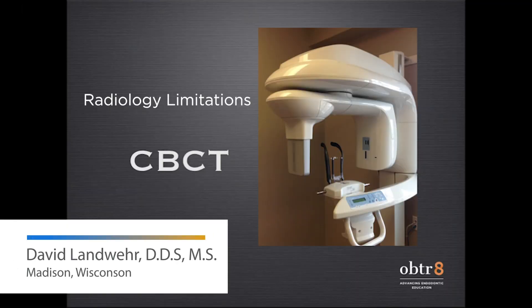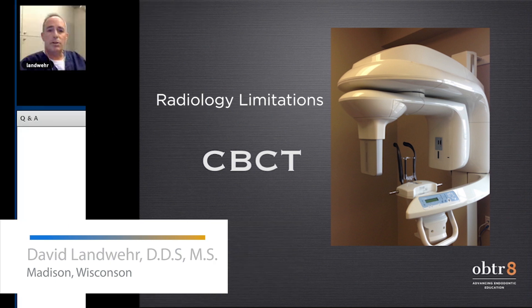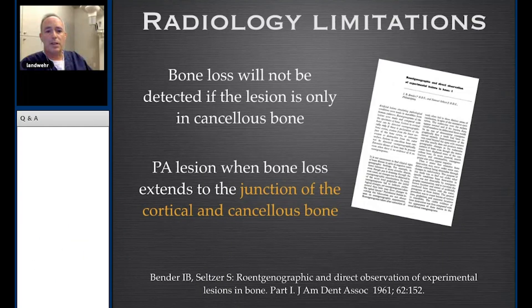Looking at the limitations of radiology, bone loss is only going to be detected according to Bender and Seltzer if the lesion is big enough to hit the cancellous bone. That lesion needs to be big enough to get to the junction of the cortical and cancellous bone — it needs to impact the cortical plate.